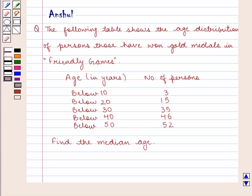Hello and welcome to the session. In this session, we are going to discuss the following question. The question says that the following table shows the age distribution of persons who have won gold medals in friendly games.